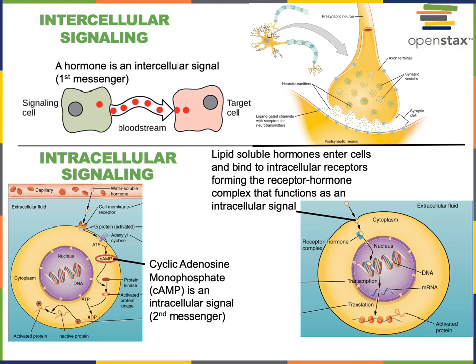Another example of intracellular signaling is shown in the bottom right here, where a hormone could bind to a receptor, and then the receptor and hormone form a complex that enters the nucleus and functions as a transcription factor in order to activate the transcription of a gene, which will then be translated to produce a protein.